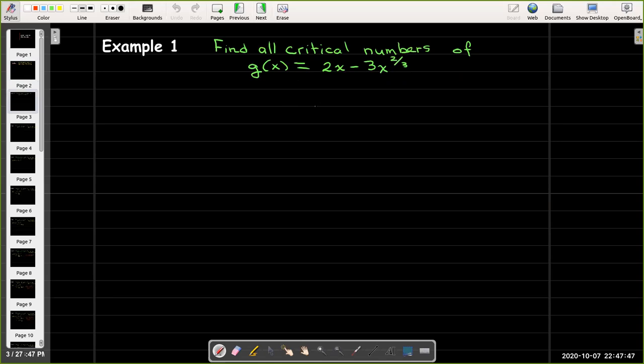So in our first example, we're going to try to find the critical numbers of g of x equals 2x minus 3x raised to the power of 2 over 3. So we're going to first examine the domain. This function has 2x, so any real number can be put in the place of x in that term, and then minus 3x to the power 2 thirds.